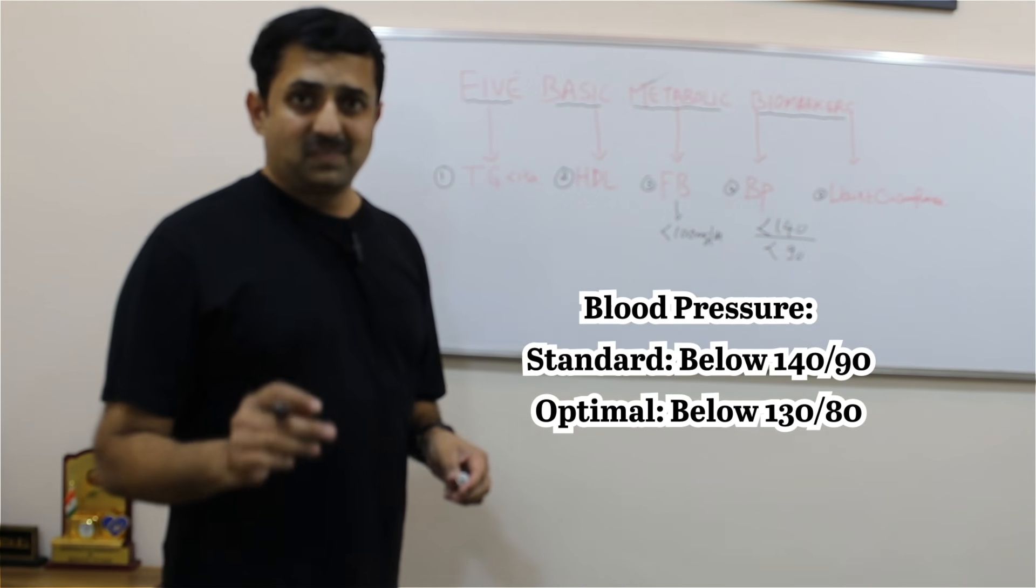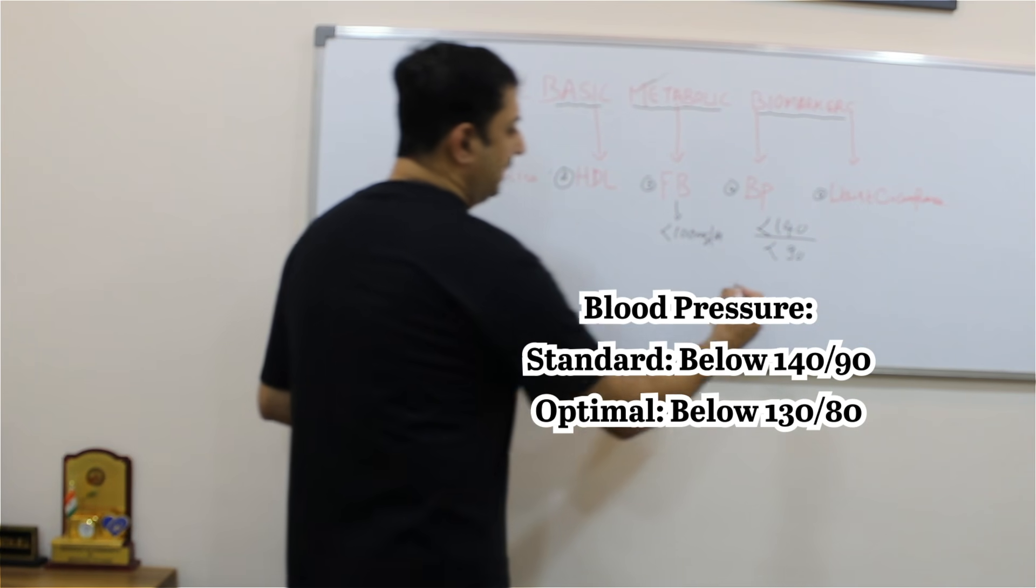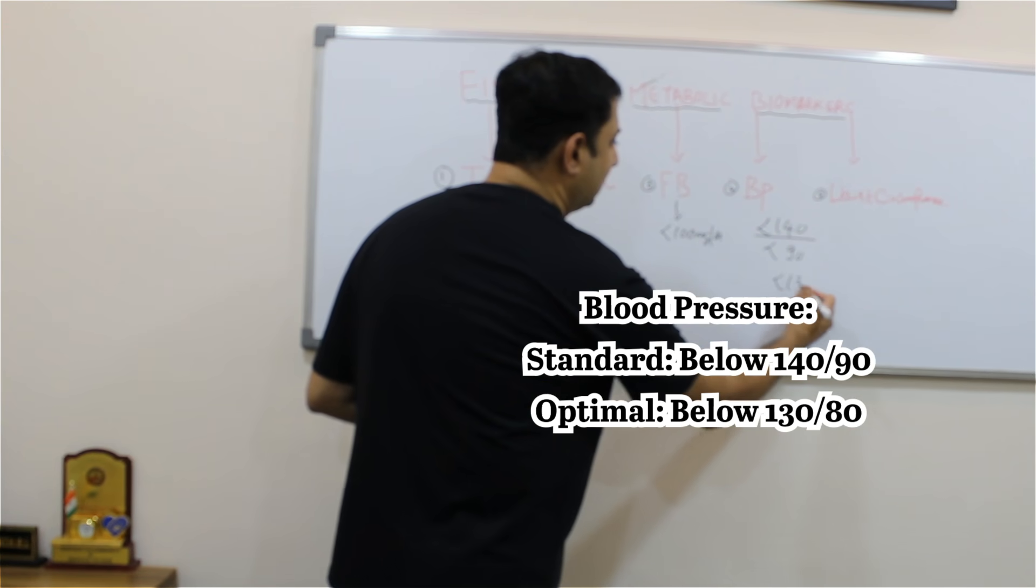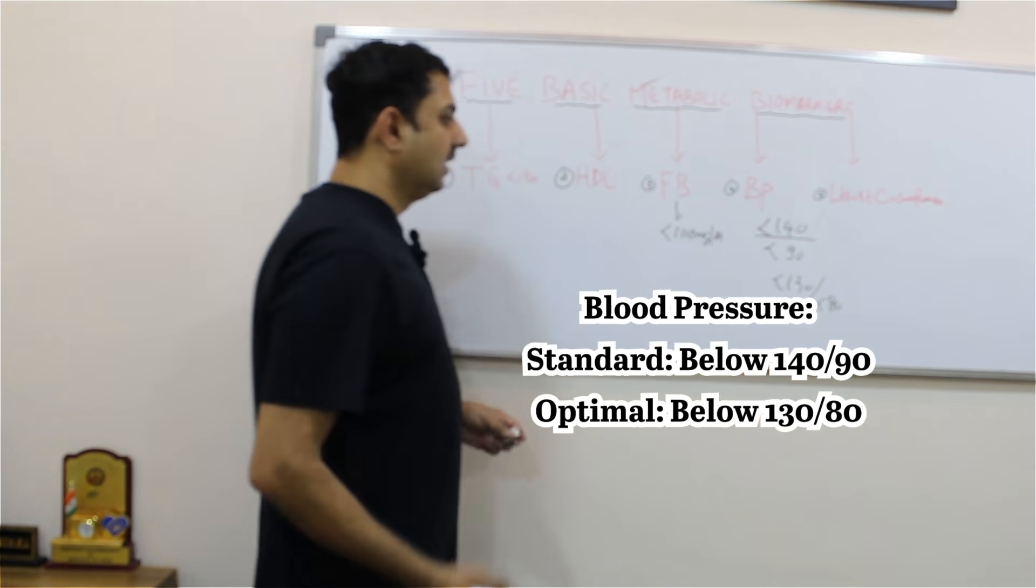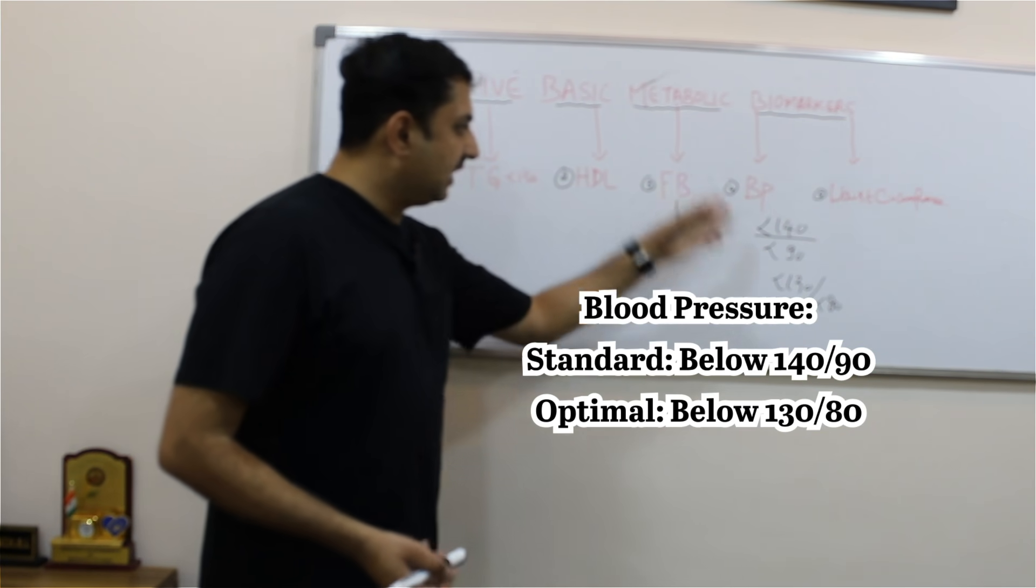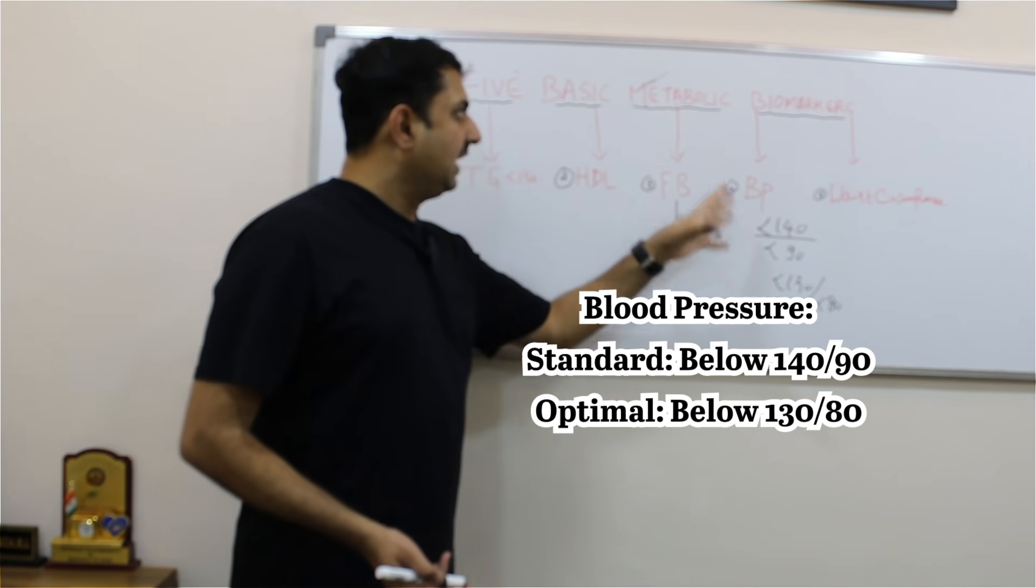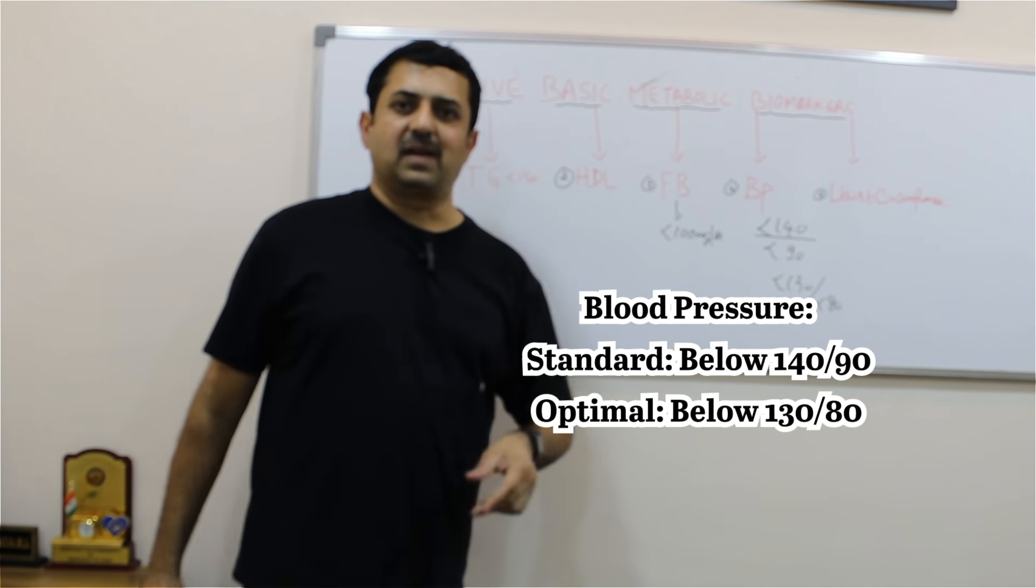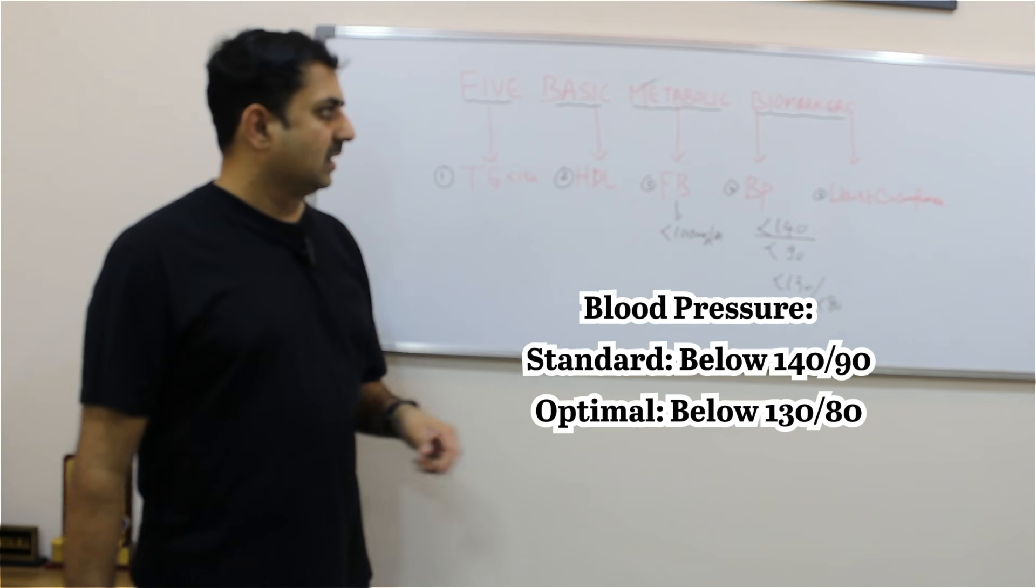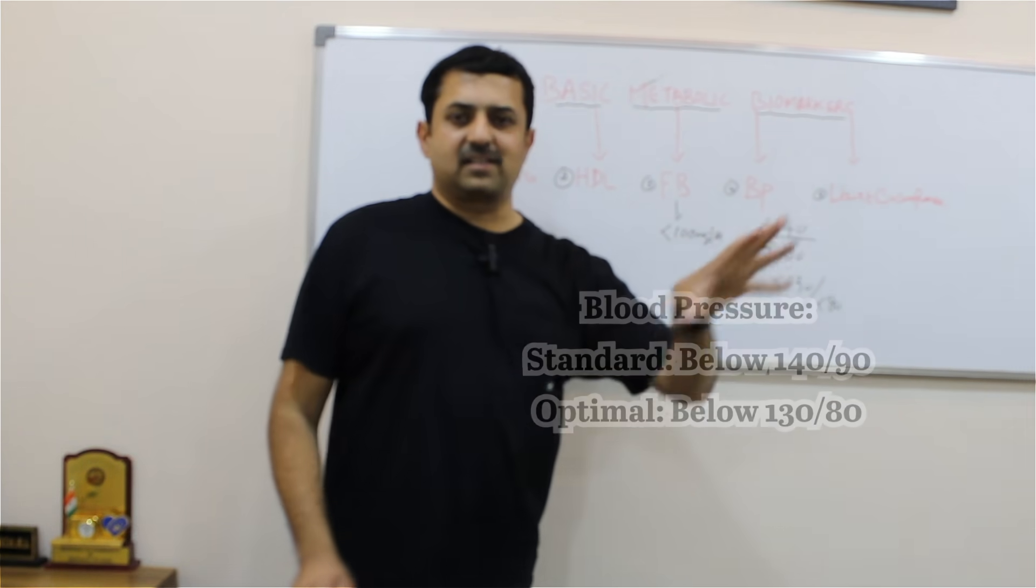Still better, optimum is keep your BP less than 130/80. So if your blood pressure is between this range, that indicates good metabolism and good energy also. Fifth comes waist circumference.